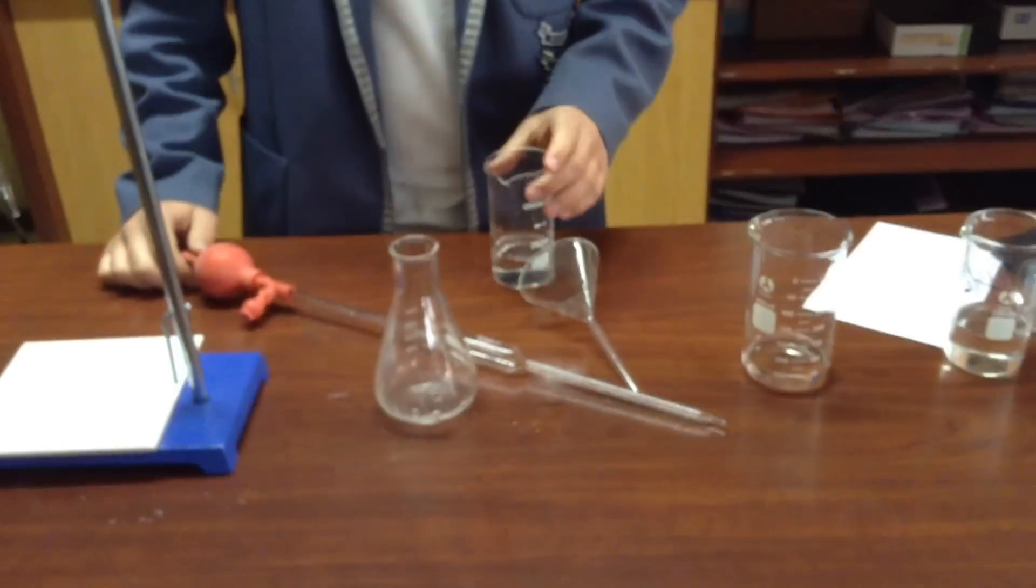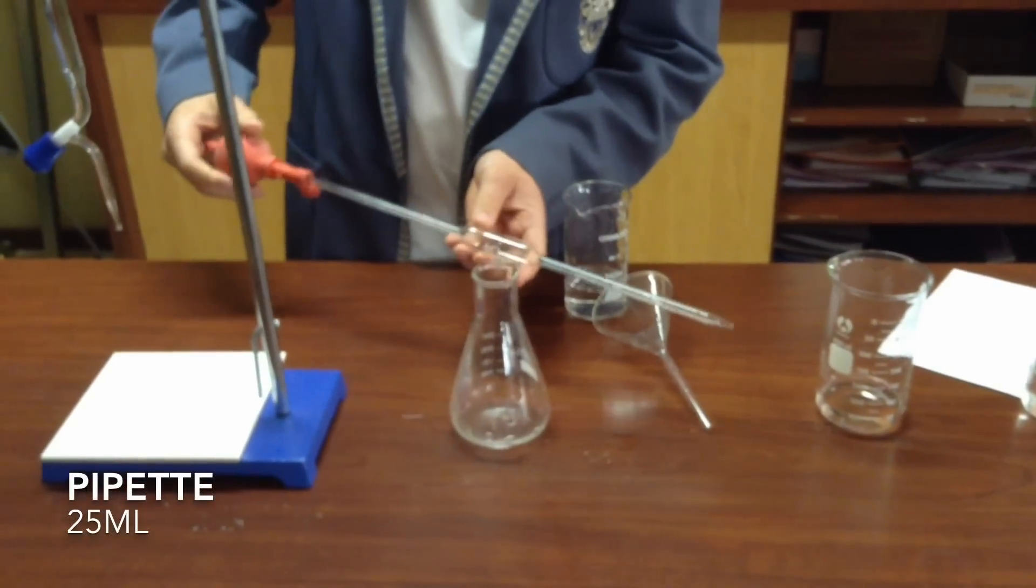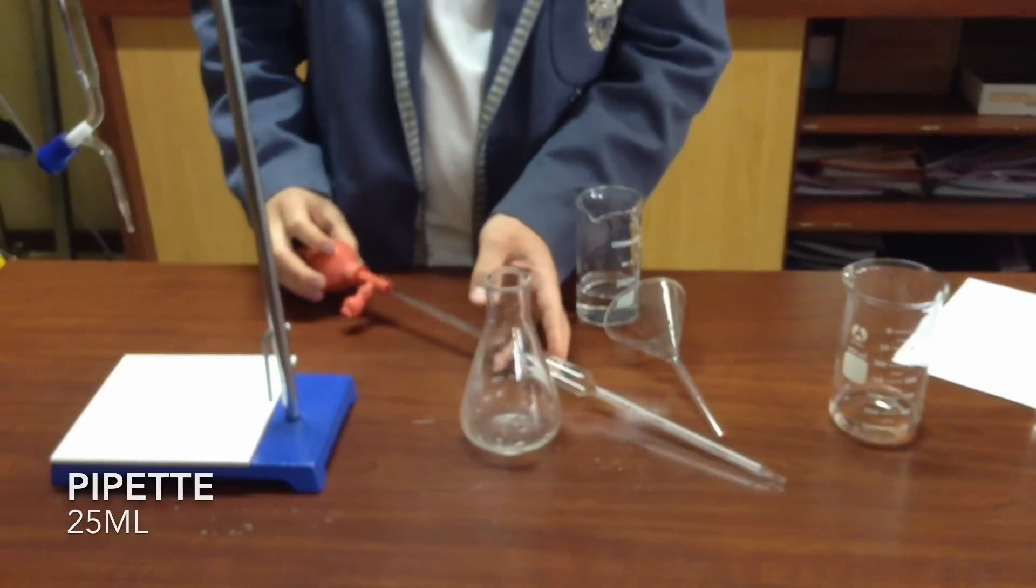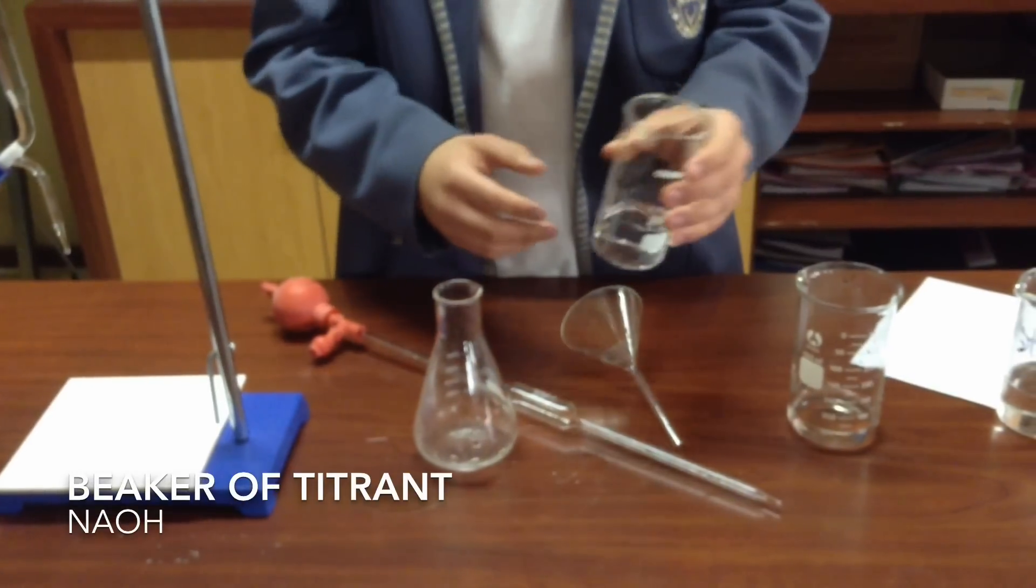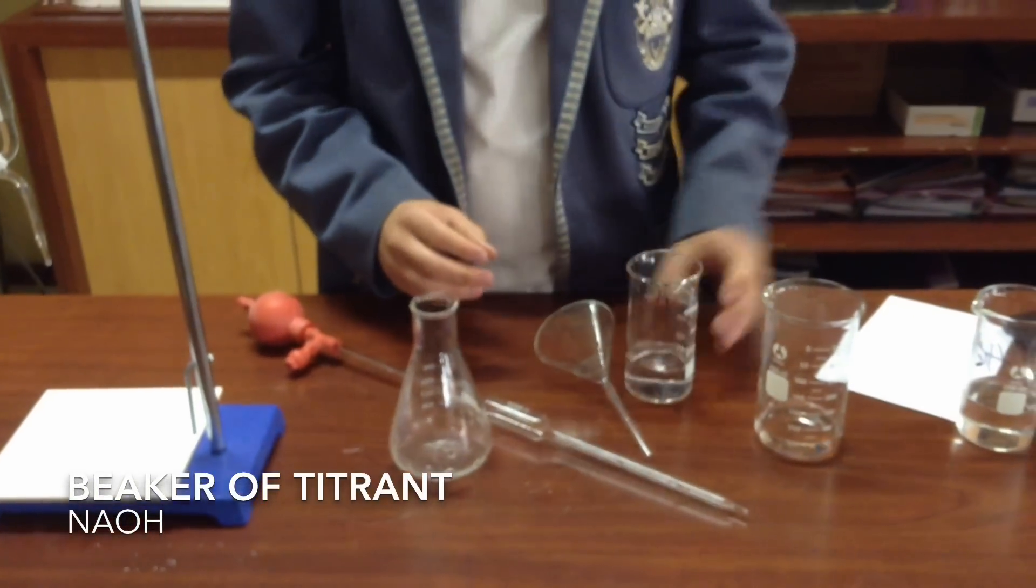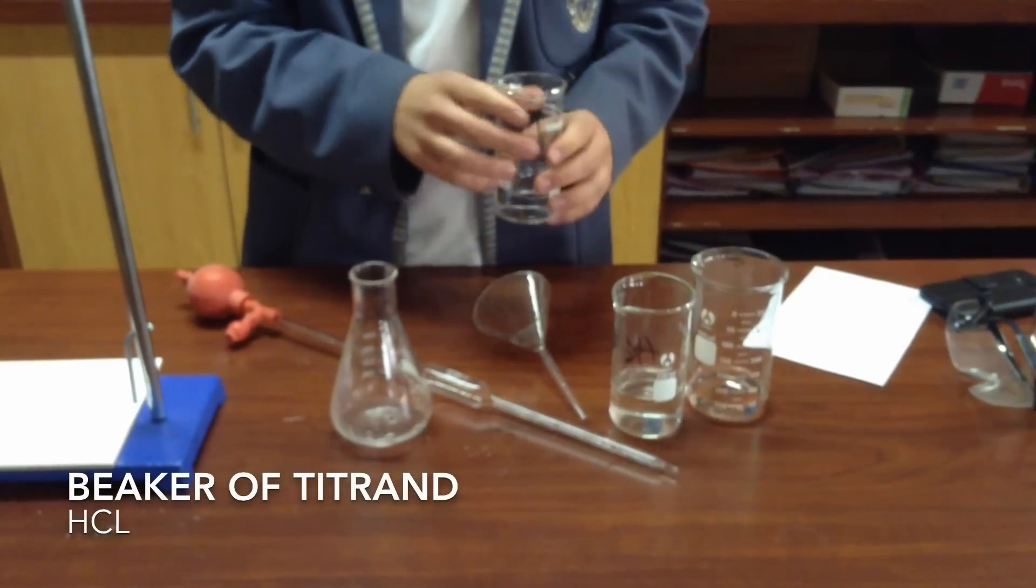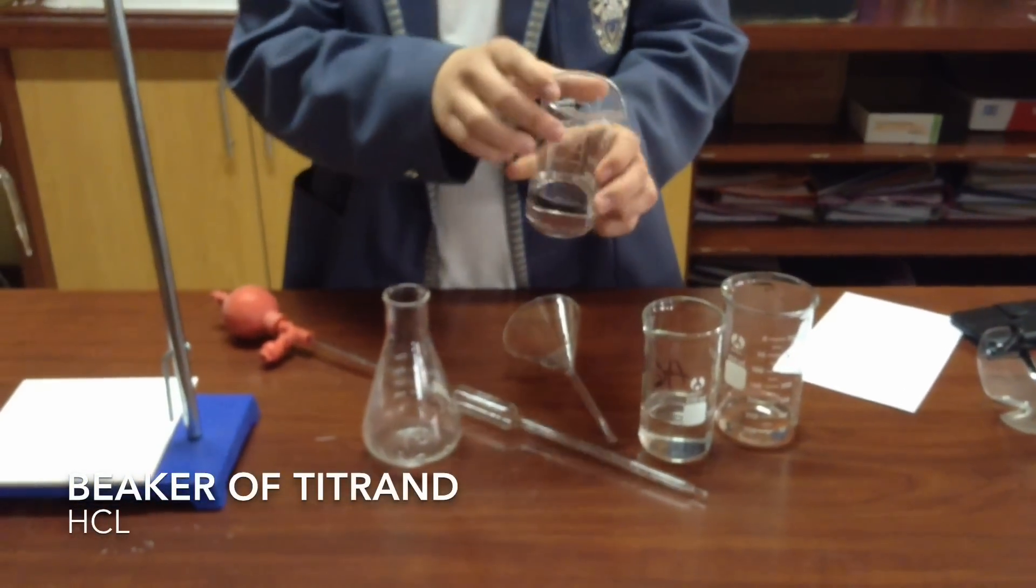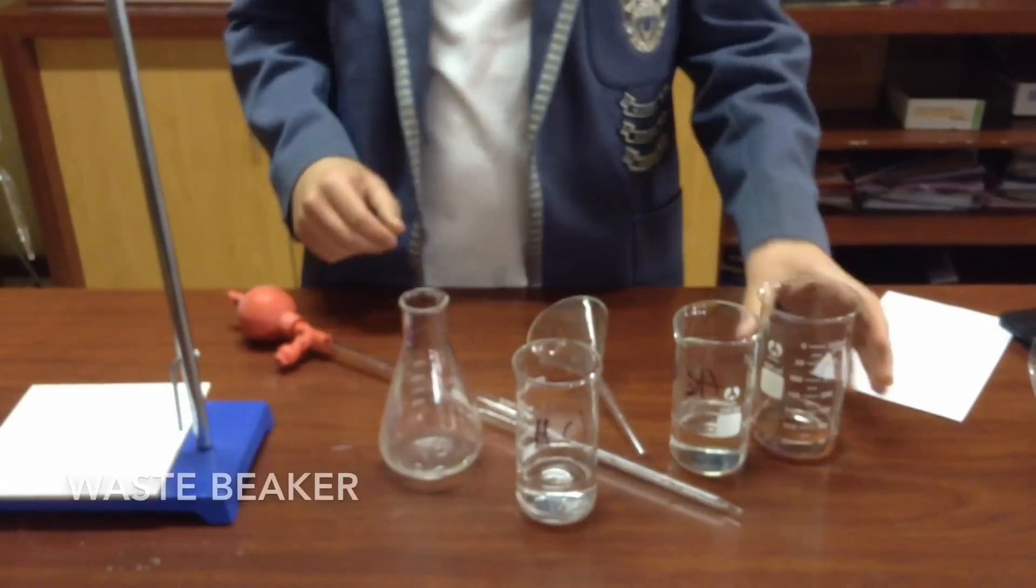We'll need the following apparatus for this experiment. We'll need a pipette - we have a 25 milliliter pipette here. You'll need a beaker of your titrant, which is your known substance, so in this case it's NaOH. And you'll need a beaker of your titrant, which is your unknown substance, which in this case is HCl.